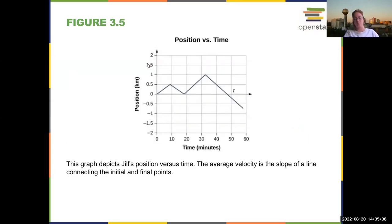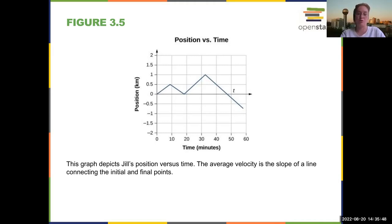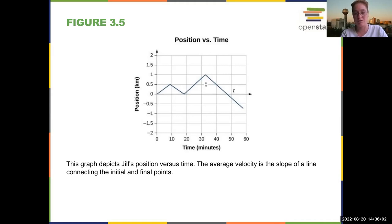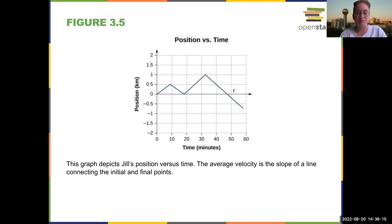This uses different units — she ended up half a kilometer from her house after 10 minutes, back at her house after 20 minutes. This is showing her position as a function of time, so we can calculate her velocity from this. The magnitude of her velocity is the slope.